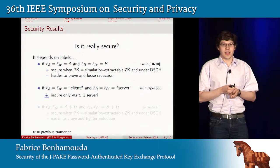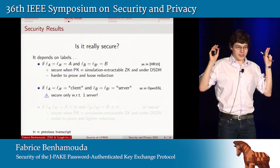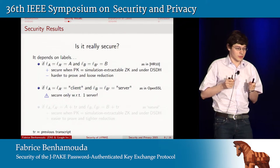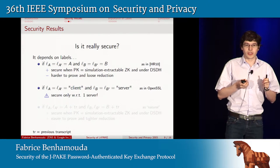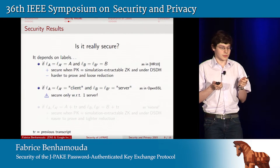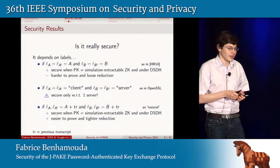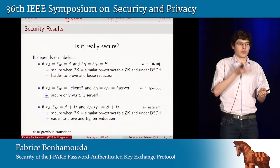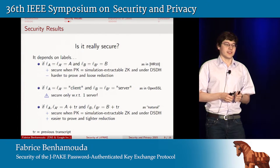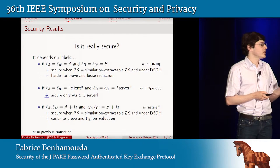If you take the labels chosen by the OpenSSL implementation — which are simply the bit string 'client' and the bit string 'server' — then we show that the JPEG protocol is only secure when there is only one server. With more than one server, it is no longer secure. Finally, if you use labels more commonly used in the cryptography community — namely, labels that contain all the previous transcripts seen by the two parties — then we can show that the protocol is secure, the proof is easier, and the reduction is tighter. That is definitely what you should use.